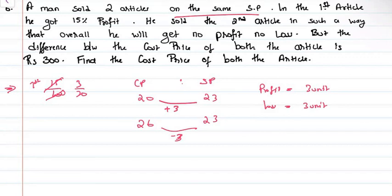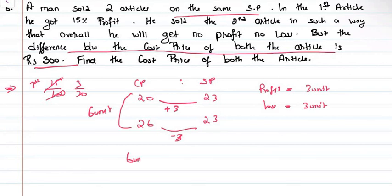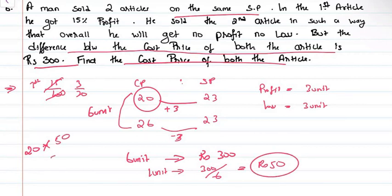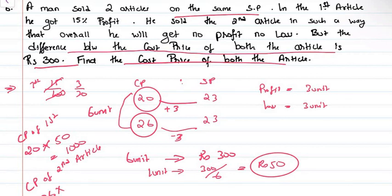The difference between the cost prices is 6 units, which equals Rs.300. So 1 unit equals Rs.50. Cost price of first article is 20 into 50 equals Rs.1000. Cost price of second article is 26 into 50 equals Rs.1300.